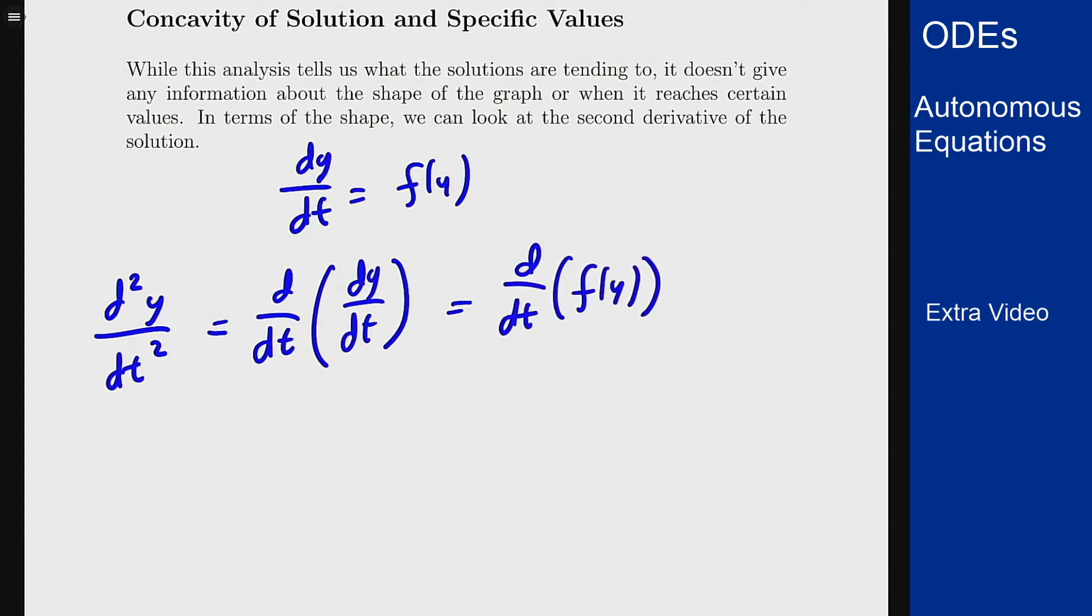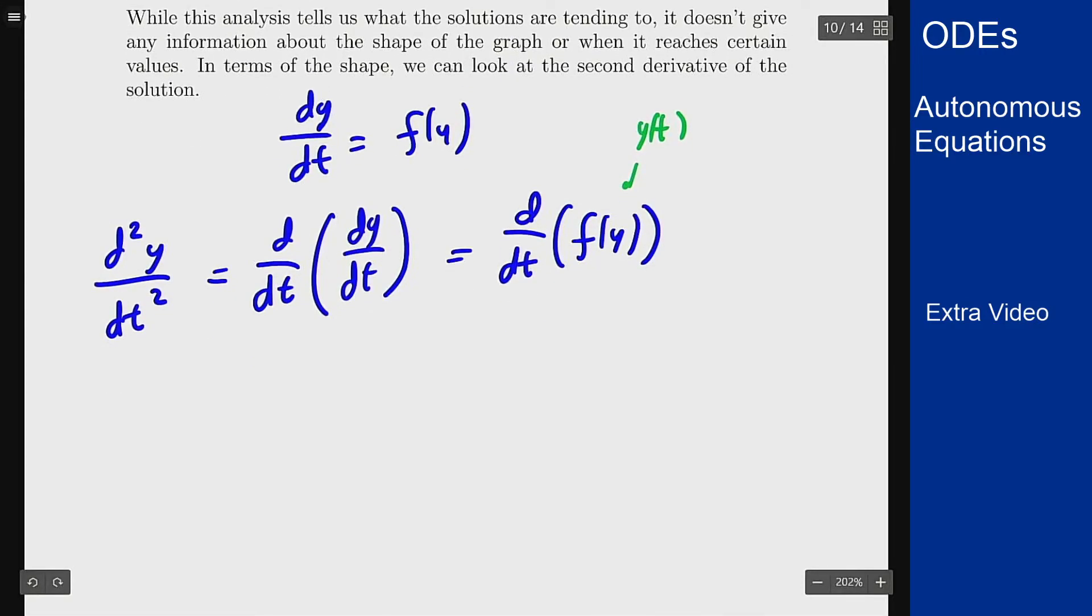How do we compute this derivative? Well y is a function of t. This is a straightforward chain rule calculation. So I'm going to get the derivative of f, so f prime plugging in y times the derivative of y on the inside with respect to t, but that's just f of y. So I get f prime of y times f of y.